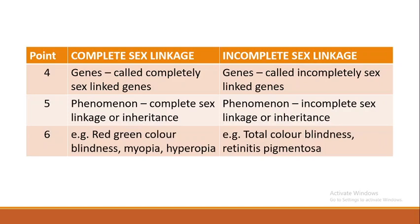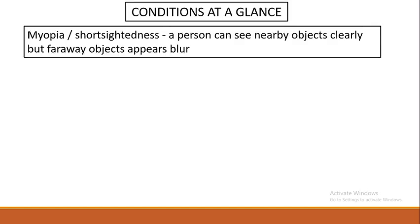Genes located on the non-homologous region are called completely sex-linked genes, and genes on the homologous region are called incompletely sex-linked genes. The phenomenon is called complete sex linkage or complete sex inheritance, and in the incomplete case, it is called incomplete sex linkage or incomplete sex inheritance. Examples of complete sex linkage include red-green color blindness, myopia, and hyperopia. Examples of incomplete sex linkage include total color blindness and retinitis pigmentosa.